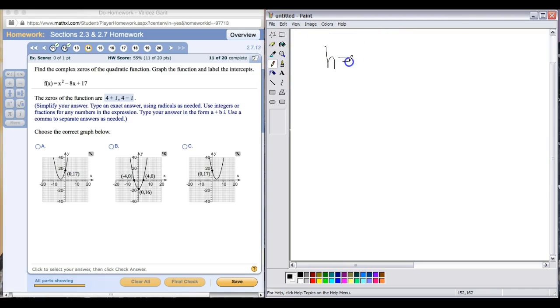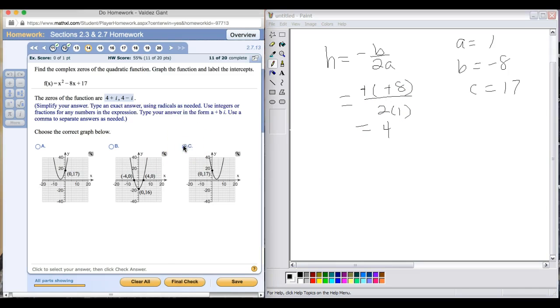Remember, h is the x-coordinate for our vertex here. If our A is 1, our B is negative 8, and our C is 17, when we plug this in, negative B would be negative of negative 8 divided by 2A. We end up getting positive 4 as an answer. That tells us that graph C should be our answer.